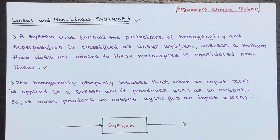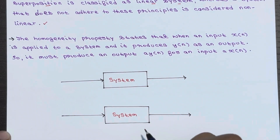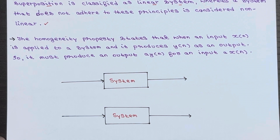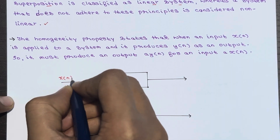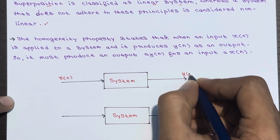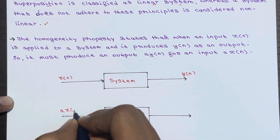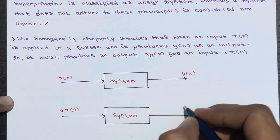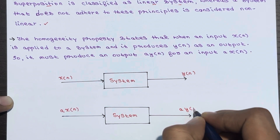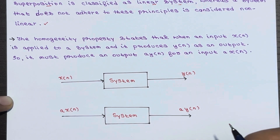Let's discuss the homogeneity property first. If you apply x of n to a system and the output is y of n, then if you apply a·x(n) to the same system, the output should be a·y(n). Then we can say the system follows the homogeneity property.